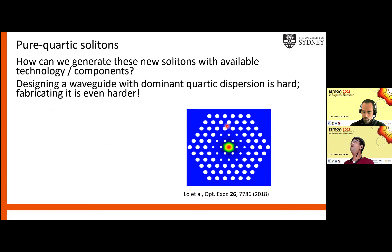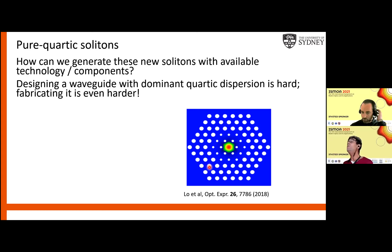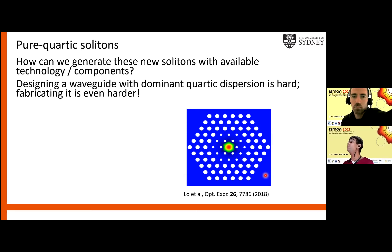What we would like to do is see these solitons in other platforms — for example, an optical fiber, which is a much easier platform to work with experimentally. But designing a fiber with dominant quartic dispersion is very hard. We designed a photonic crystal fiber for this purpose, but fabricating it is well-nigh impossible. If anyone thinks they can design a photonic crystal fiber that's easy to fabricate with dominant quartic dispersion, please let me know.